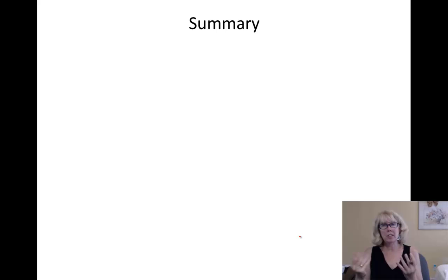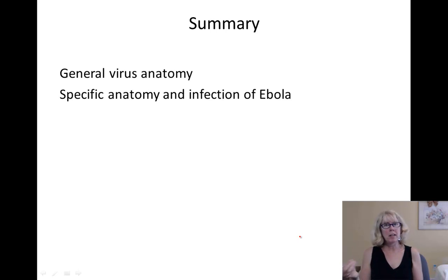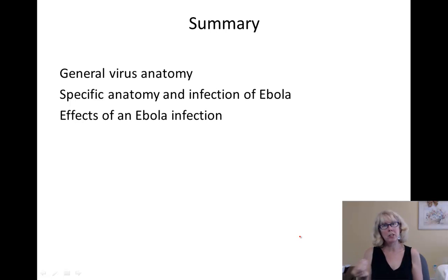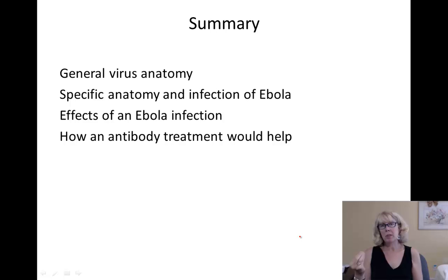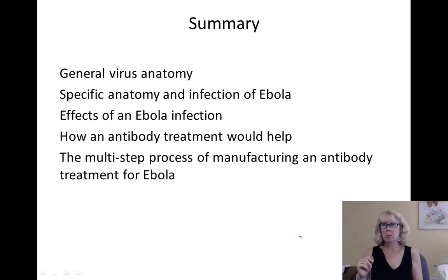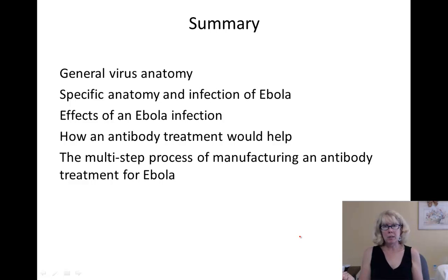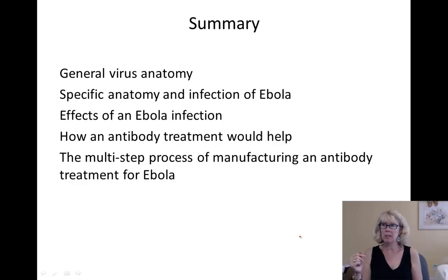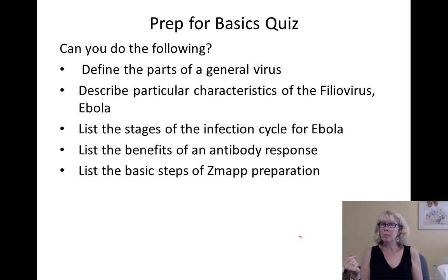That's all the content for this lecture. To summarize, we've talked about general virus anatomy, the specifics of Ebola and what happens during an infection in the host cell and in the body, why an antibody treatment would be helpful, and why it's so hard to make ZMapp in order to mount an antibody treatment for this disease. That completes our basics video — be able to do the following in order to do well on the quiz. Thank you so much for watching.